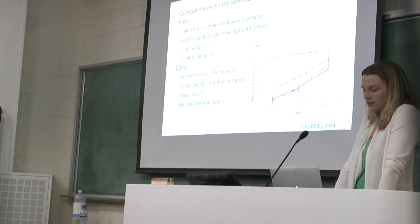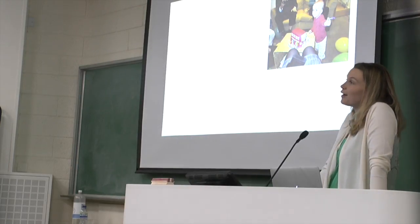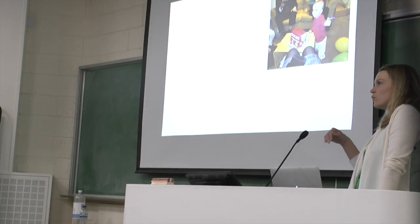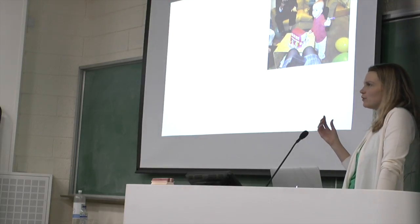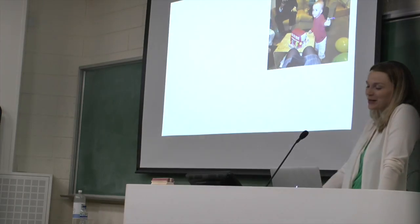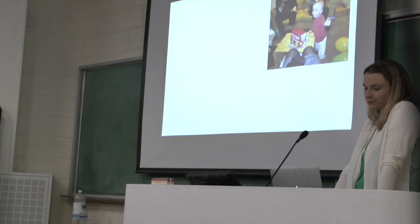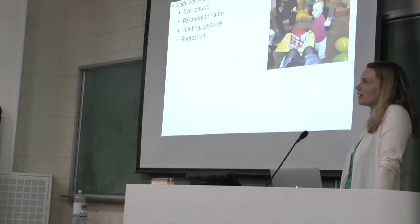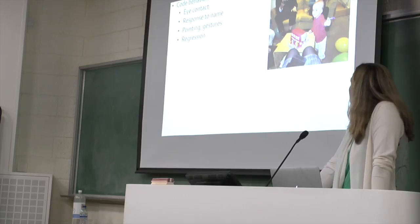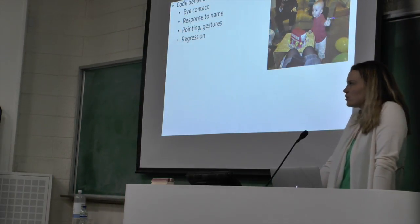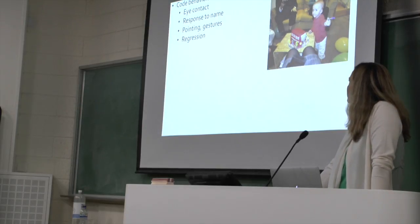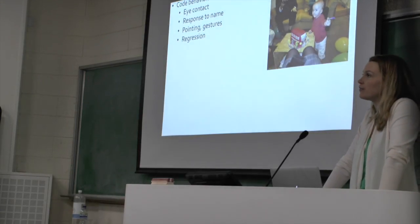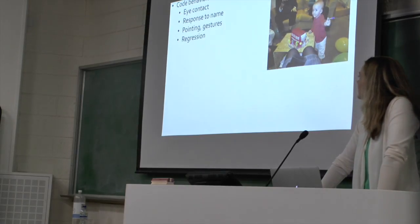Partly because of that, there was a new wave of research using videotape. Now that lots of parents have home videos, we can ask them to give us tapes of their babies when they were younger, and look at what differences there might be between children who now have autism and those who are typically developing. Often these are first birthday videotapes because the settings are more constrained. This research has looked at things like eye contact, babies responding to their names, pointing, and gestures — some of the classic early signs of autism.